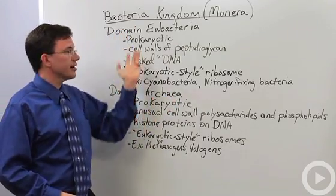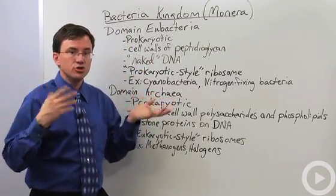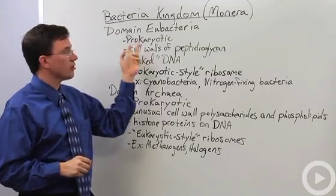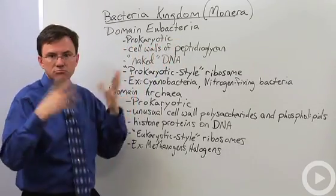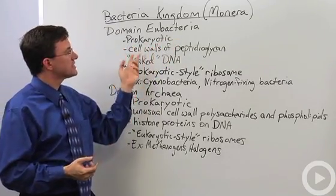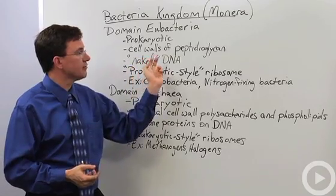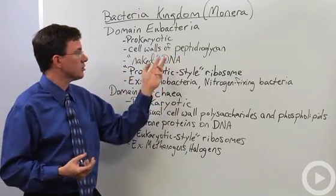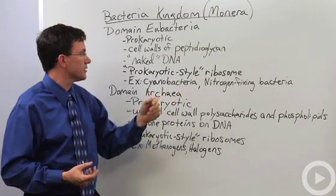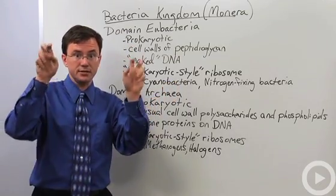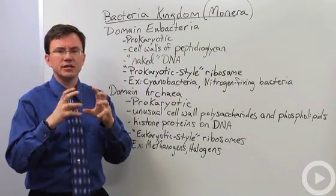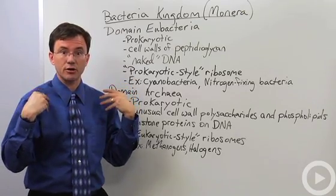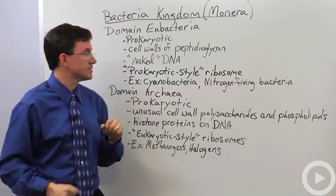What are some of the characteristics of the eubacteria, or true bacteria? Well, they're all prokaryotic. They have cell walls made of a mesh between polysaccharides and amino acids called peptidoglycan. They have what's called naked DNA, which just means it doesn't have the histone proteins that eukaryotic DNA, like ours, is wrapped around to help organize it.